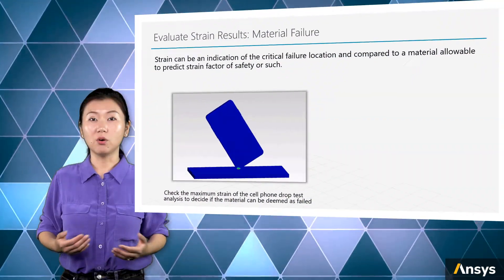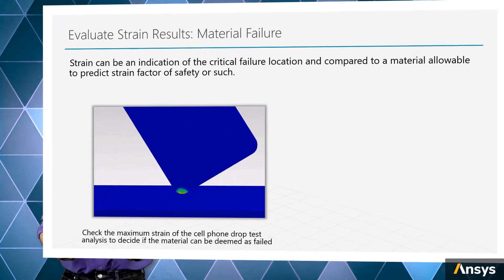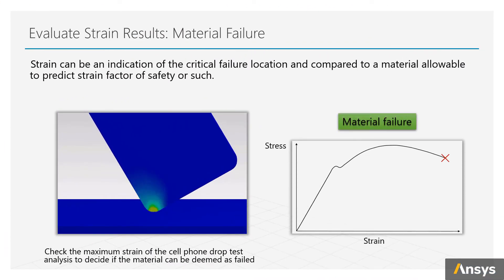For example, for the cell phone drop test, if the allowable equivalent strain for the material is 0.1, since the results show a larger equivalent strain, we can say that at the critical location, the material has failed.